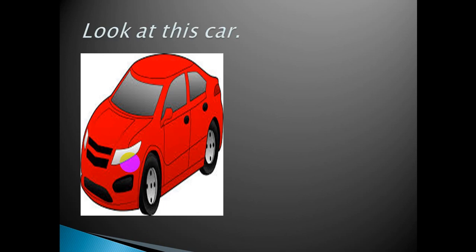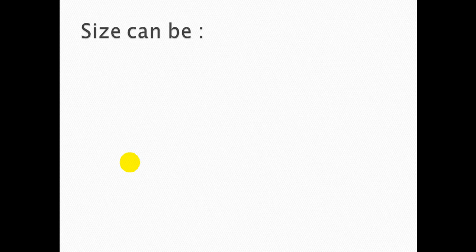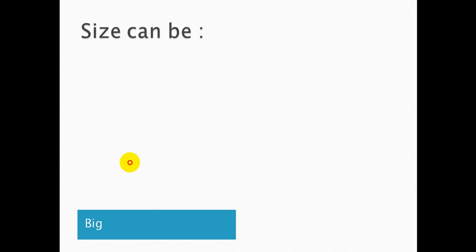Let's have a look at this car — it is matter. Some properties of this car: its color is red, and another property is that it is smooth — when you touch it you will feel it is smooth. It is big; you can observe with your eyes that it is big. Now let's discuss some properties of matter. The first property is size, and size can be big like this bear or small like this bird.